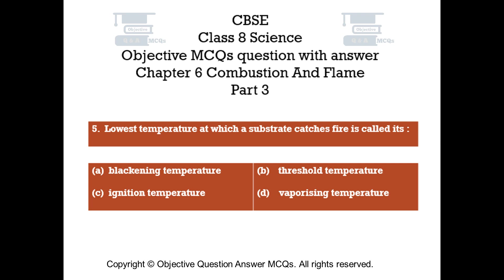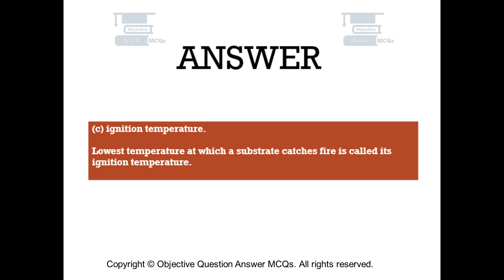Question number 5. Lowest temperature at which a substrate catches fire is called its: Option A Blackening Temperature, Option B Threshold Temperature, Option C Ignition Temperature, Option D Vaporizing Temperature. The right answer is Option C — Ignition Temperature. Lowest temperature at which a substrate catches fire is called its Ignition Temperature.